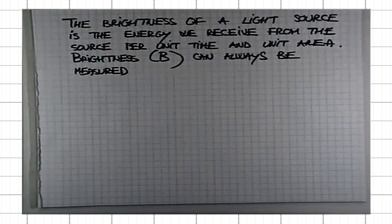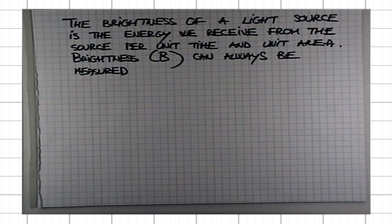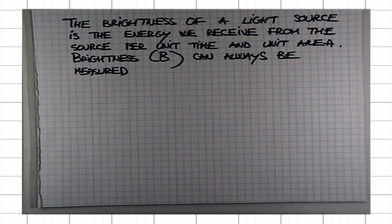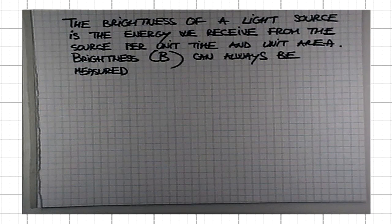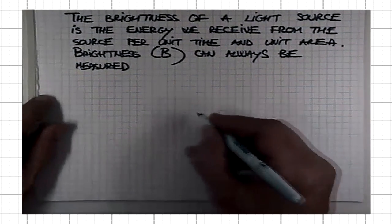What is the precise relationship between the luminosity of the source, say a star, its distance from us, and its brightness that we detect? Well, it's quite simple, really.